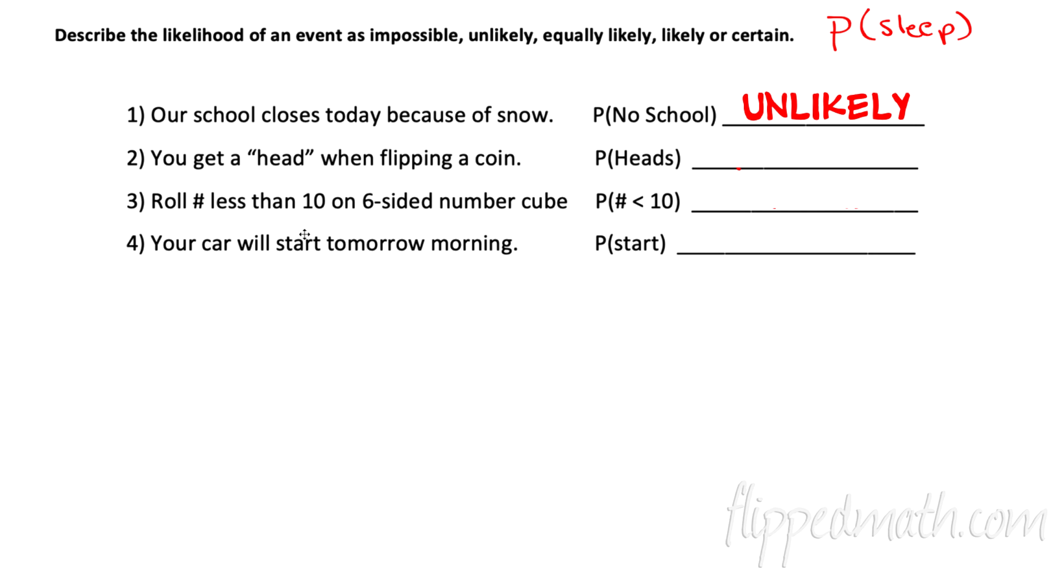How about if you get a head when you're flipping a coin? Well, that will happen exactly half the time. There's two outcomes. So you can either get a heads or tails and then a success here would be a head. So one success out of two, that would be equally likely. You get a head half the time.